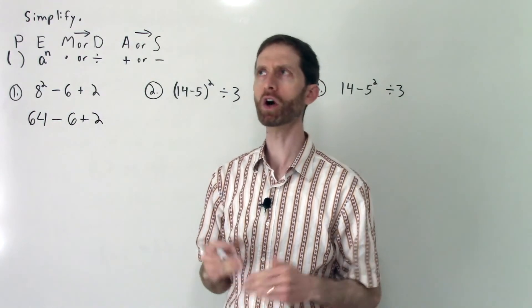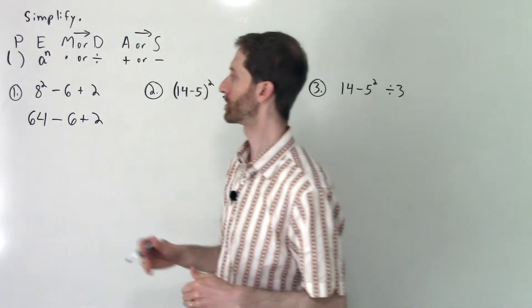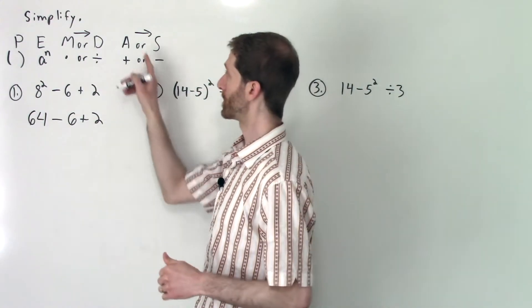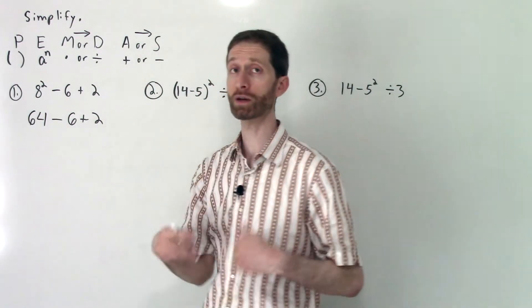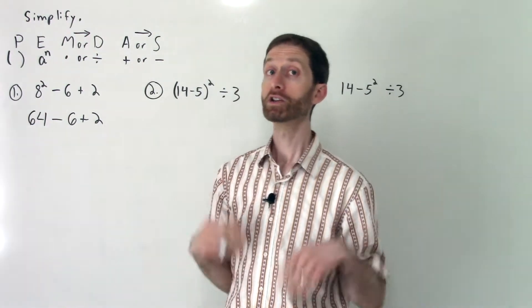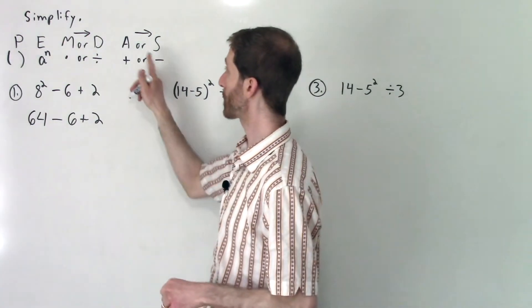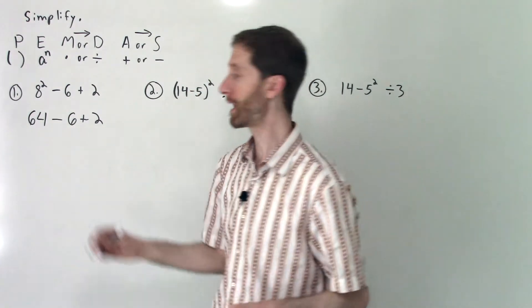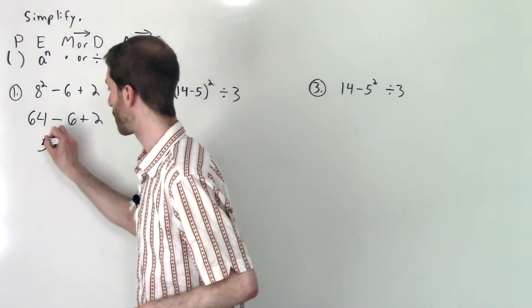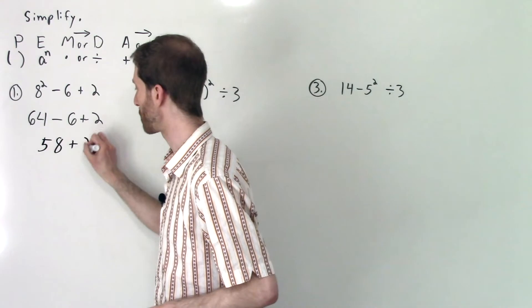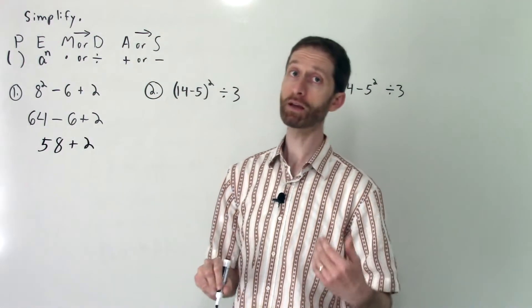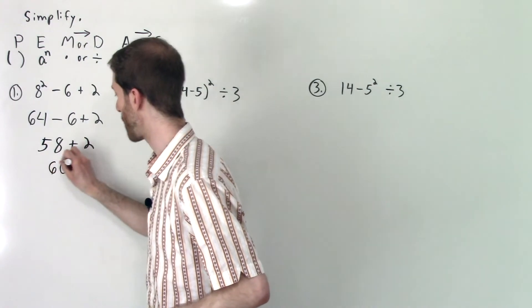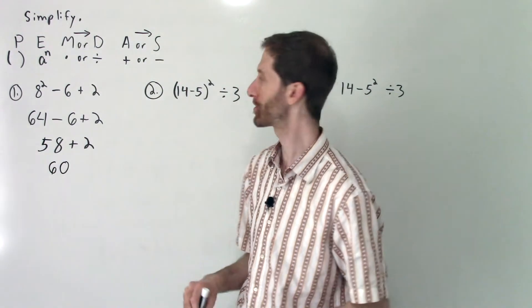Now I reset my brain. I don't do too many operations at once. I have no multiplication or division remaining, so I have addition and subtraction with subtraction coming first from the left. So 64 - 6 is 58 plus 2, and finally 58 + 2 is 60, and that is your answer.